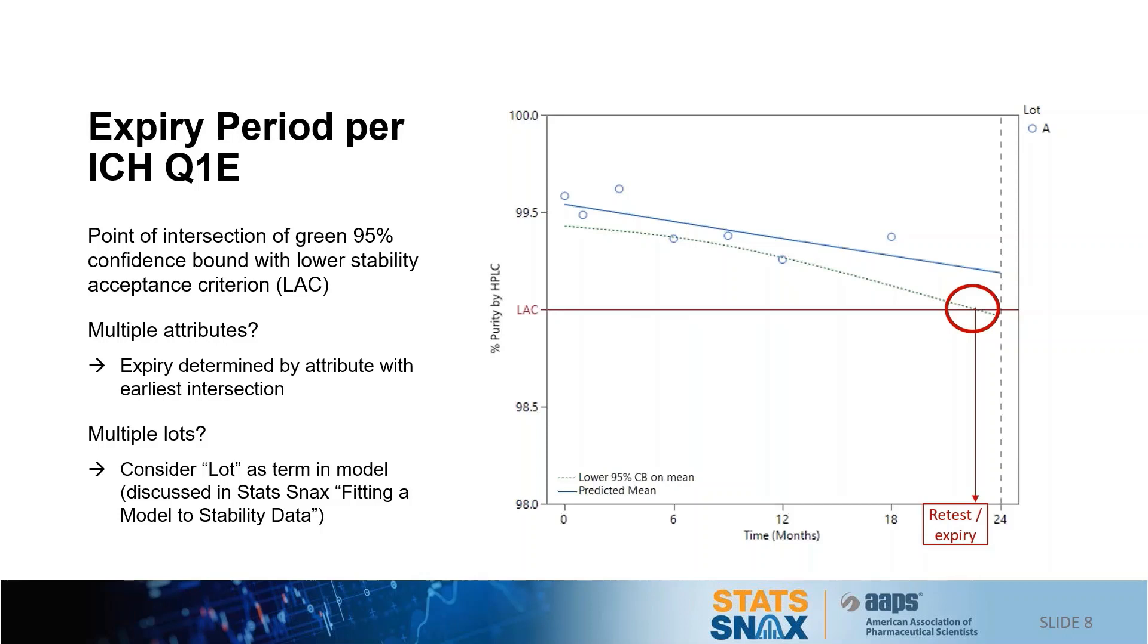To determine the dating period, we superimpose the stability specification acceptance criterion and either ensure that the confidence bound doesn't intersect the acceptance criterion before the claimed dating period or we set the dating period at the earliest point of intersection. In this figure that looks to be at around 22 and a half months.